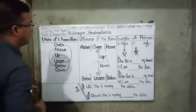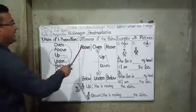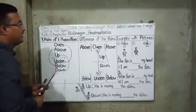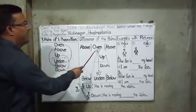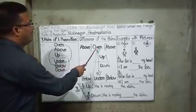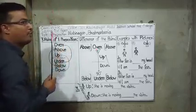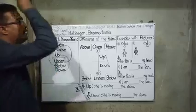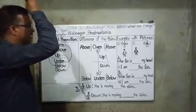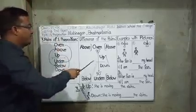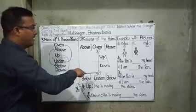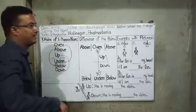So my dear learners, just have a look at the second step — difference of the pairs. Its opposition is under, just 90 degrees under, just 90 degrees near.